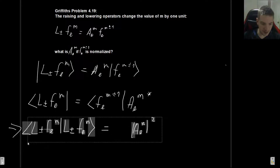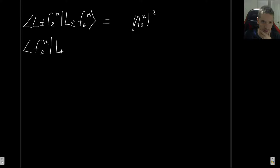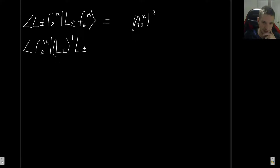Let me take this to the next page so I have more room to work with. On the left-hand side we have L± acting on this bra. But we know we could also write this as ⟨f, l, m| with the operator moved to the other side, but we have to take its Hermitian adjoint - that's something we saw a few videos ago. So we can rewrite this accordingly.